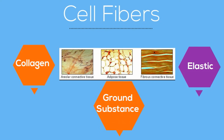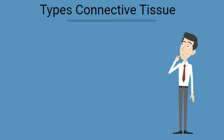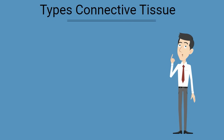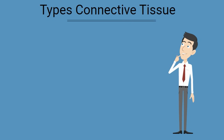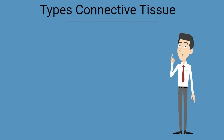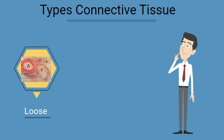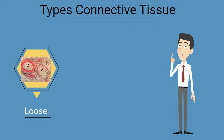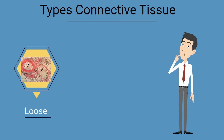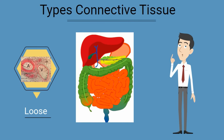There are several different types of connective tissue and they are found throughout the body. First up is loose connective tissue. It is composed of collagen and elastic fibers and is found in and around blood vessels and organs.